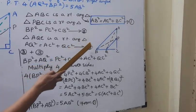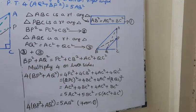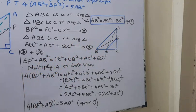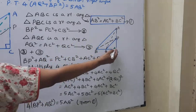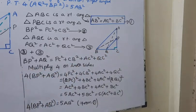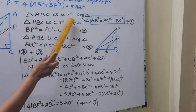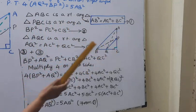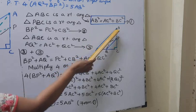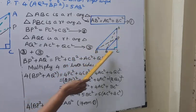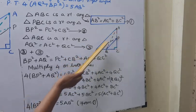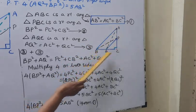ABC is a right angle triangle. That is the first step. Triangle ABC is a right angle triangle. If we use the Pythagoras theorem, we get: AB square equal to AC square plus BC square. That is equation 1.